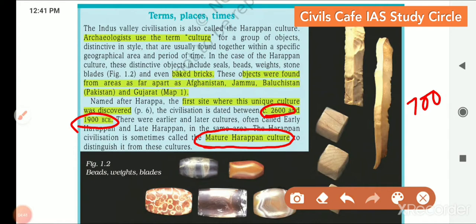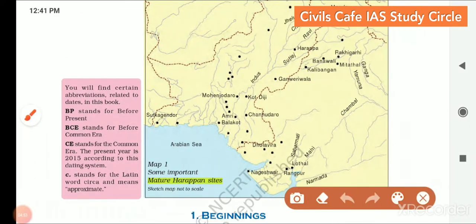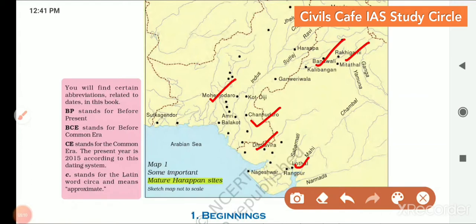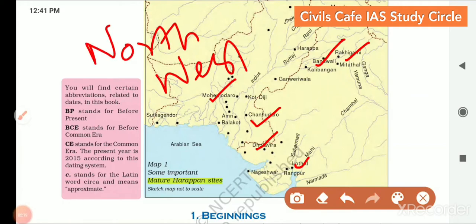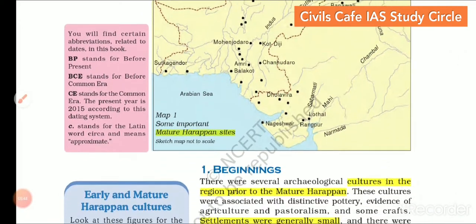Moving on, the map shows different Harappan sites — important ones include Lothal, Dholavira, Chanhu-Daro, Mohenjo-Daro, Rakhigarhi, Banavali, Kalibangan, etc. These sites lie in the northwest part of present-day India, in an arid or semi-arid region. You should always link history with geography because geography plays an important role in shaping human social lives. These are the important mature Harappan sites.